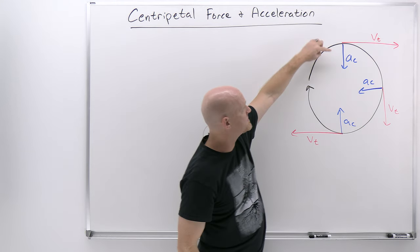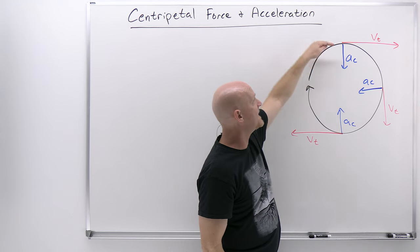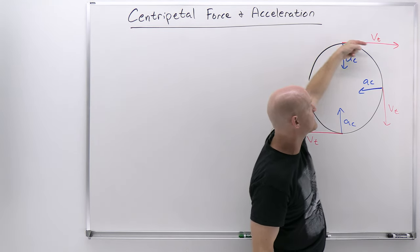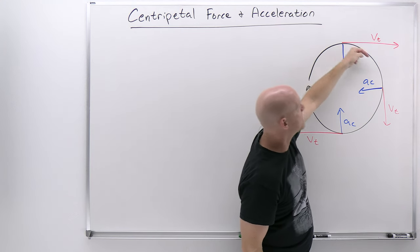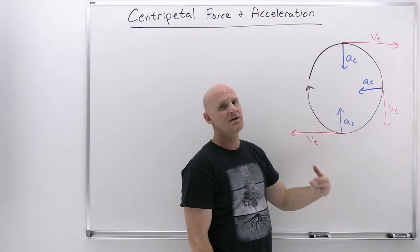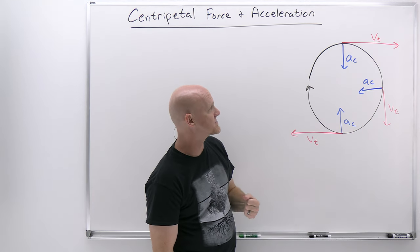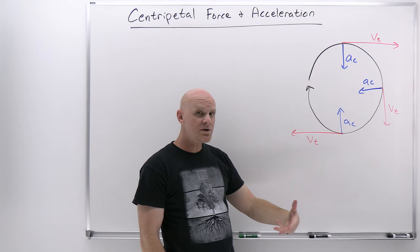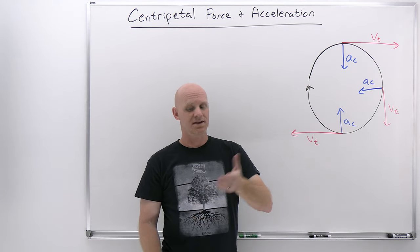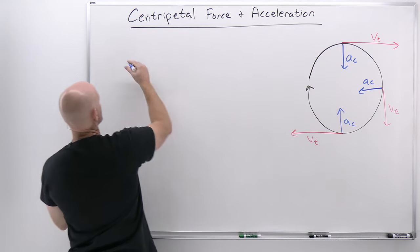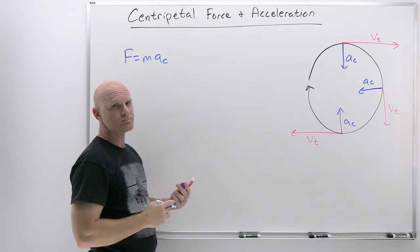If we had something attached on a string going around and around, at the top of the circle at that instant it's traveling to the right, but there is something causing it to accelerate downward, keeping it on that circular path — that's the centripetal acceleration. There's a force accompanying that centripetal acceleration we call the centripetal force, and just like F equals MA, in this case we're going to refer to it as F equals MA_c.